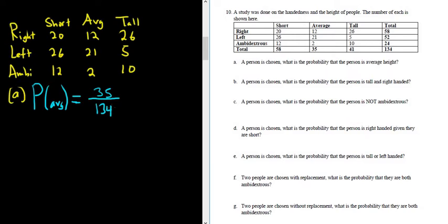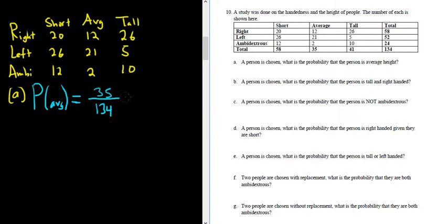The probability of picking an average person is the number of ways to pick an average person divided by the number of ways to pick a person. There are 35 ways to pick an average person and 134 ways to pick a person, so 35 over 134. I got 0.26.